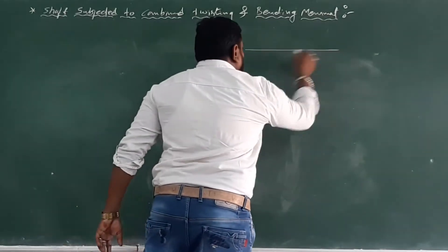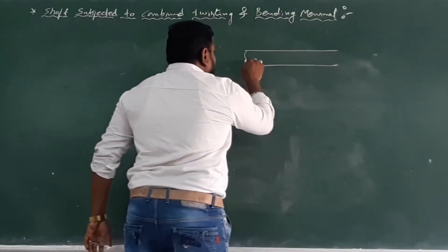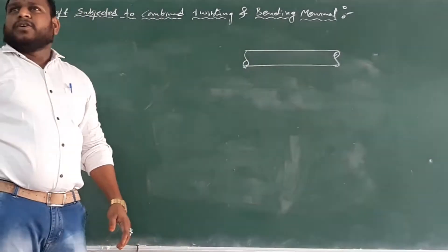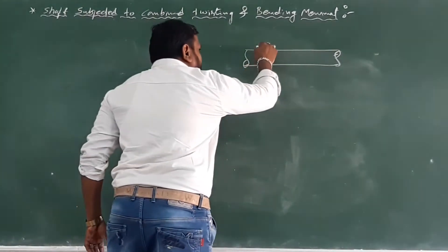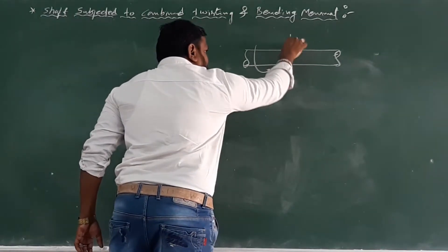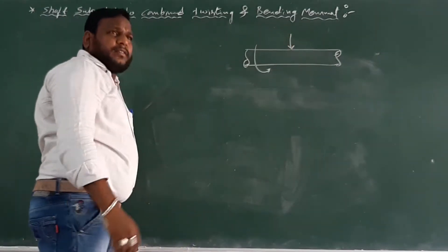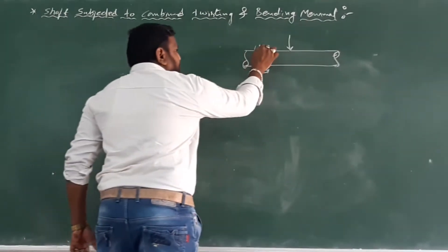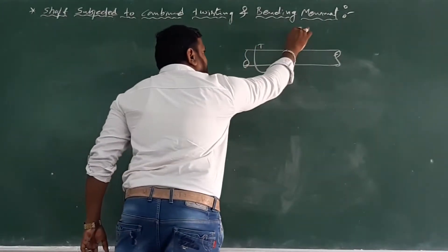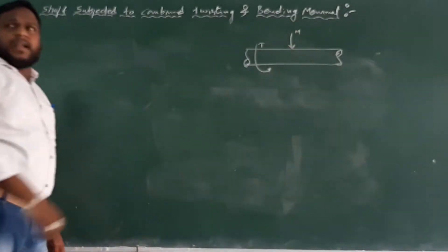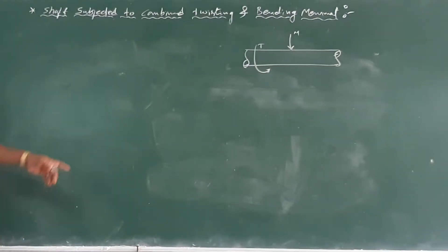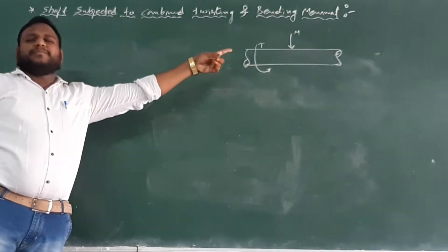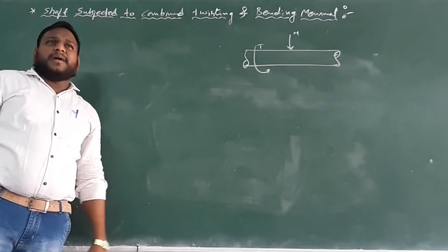The shaft is subject to combined twisting and bending moment. The bending moment is M, and the twisting moment is T. The distorting (twisting) moment is denoted as D, and the bending moment is also given as T (torque).